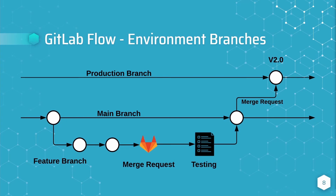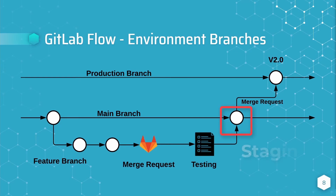Like the GitHub flow, this workflow utilizes feature branches off of the main branch, but main is merged into some number of environment branches, and then to the production branch. You can think of merging a feature branch into the main branch as deploying your changes to a staging environment. Once changes have been verified in the staging environment, they can be promoted to the production branch. You can have multiple pre-production environment branches representing various environments in which the changes must be tested in before merging those changes into the production branch.